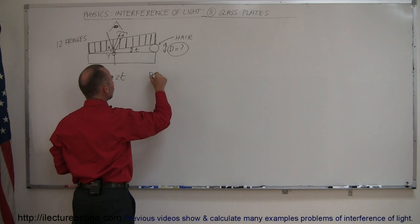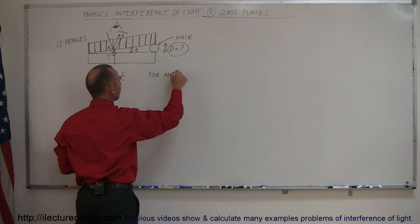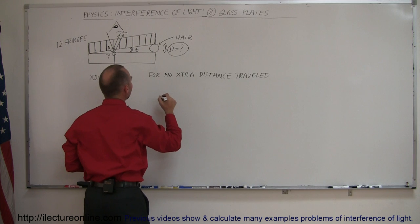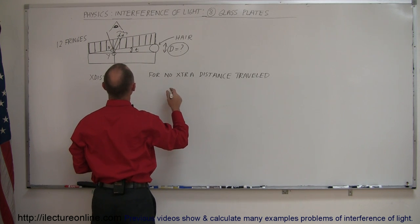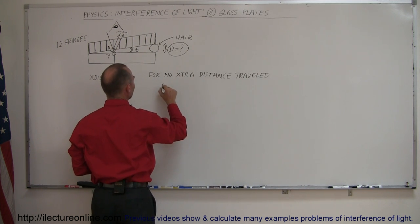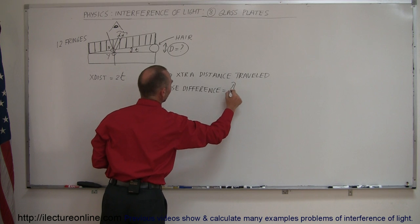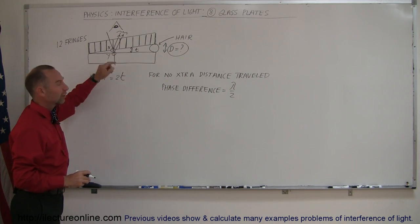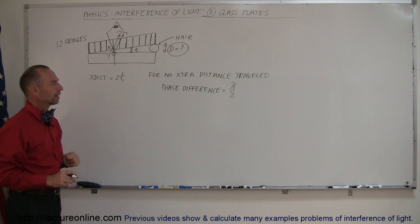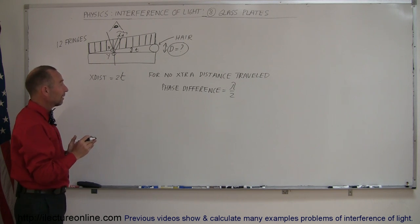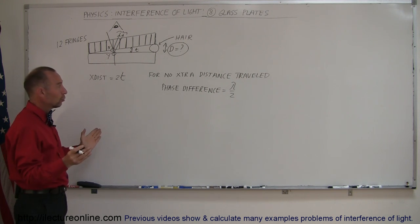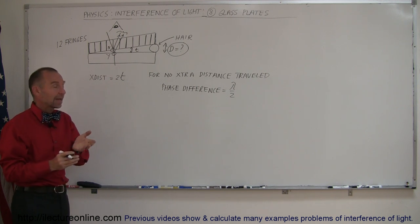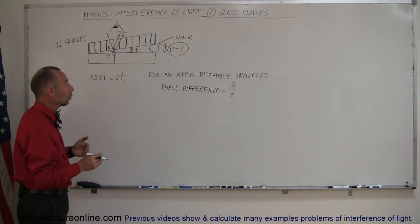Since the two boundaries are not the same, without traveling any extra distance there's already a half wavelength of phase shift. So for no extra distance traveled, the phase difference is equal to lambda over 2. We can use lambda because the light travels through air, so we don't have to worry about the index of refraction. If there's no extra distance traveled, the two beams will destructively interfere because one of them has phase-shifted by half a wavelength and the other has not.